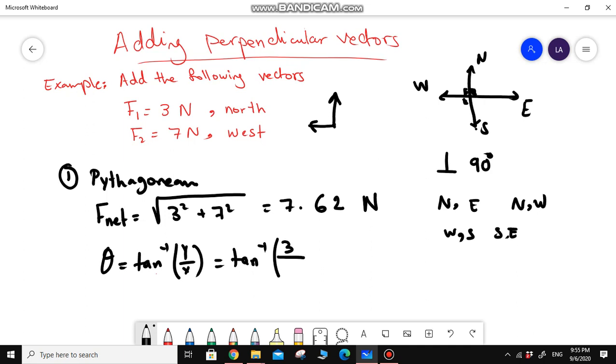And the horizontal vector, or the vector along the X axis, will be 7. You will do on your calculator, shift tan, 3 divided by 7, and this will give you the angle. It is 23.2 degrees.